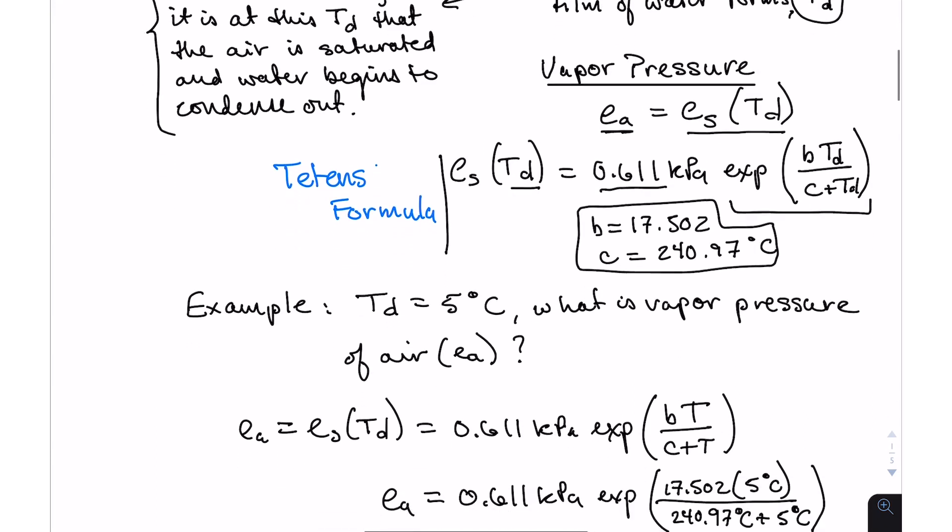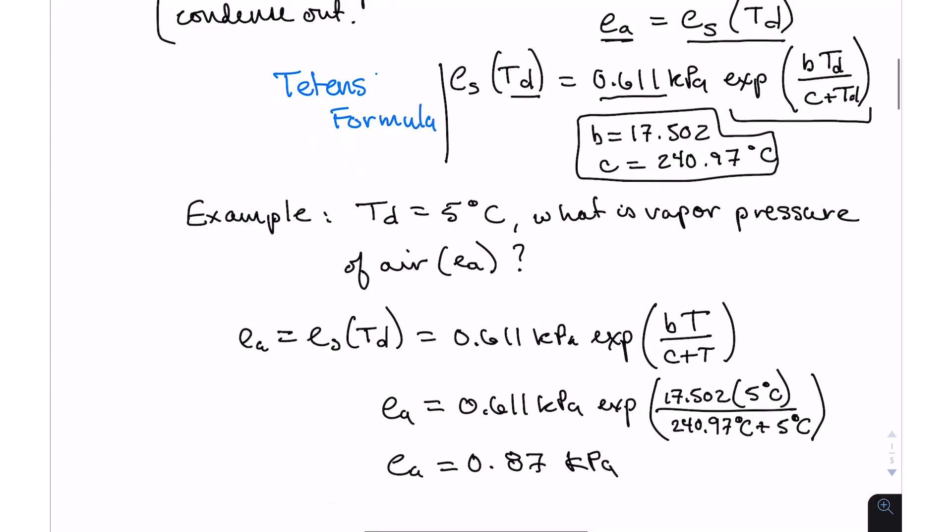Let's do a quick example. Let's assume that our dew point temperature was five degrees Celsius. This is something you can find in many weather reports. If you look down the list of measurements carefully, it's usually there. So what is the vapor pressure of the air EA? The vapor pressure of the air would just be the saturation vapor pressure at the dew point temperature, and that dew point temperature is now five degrees.